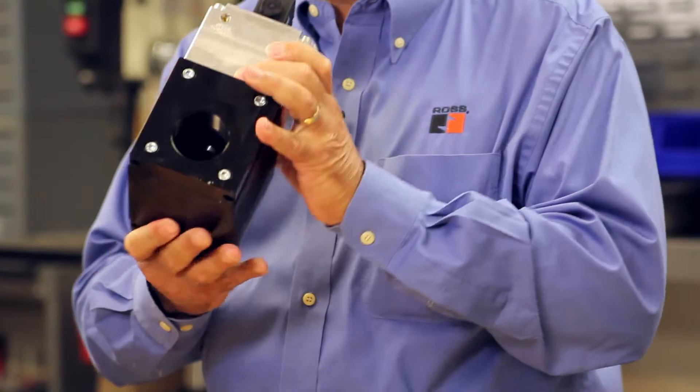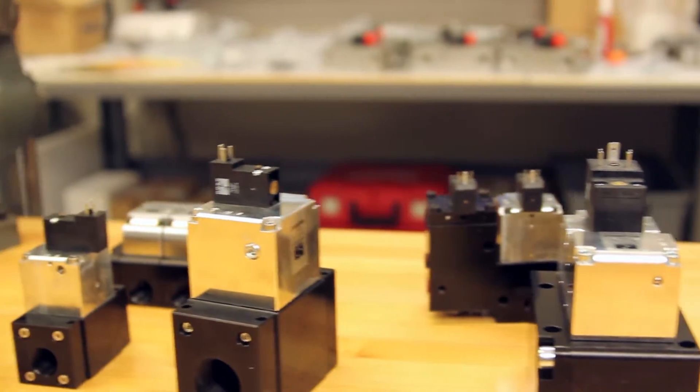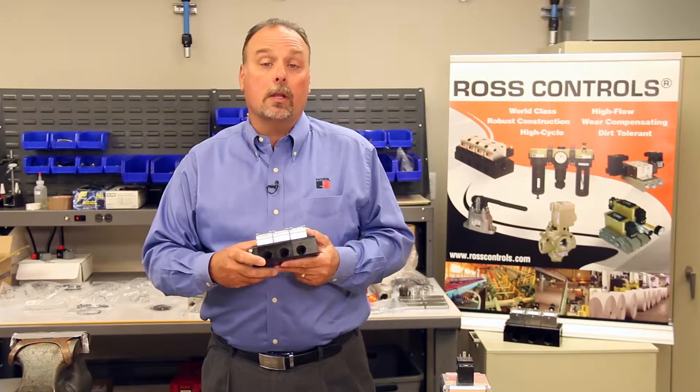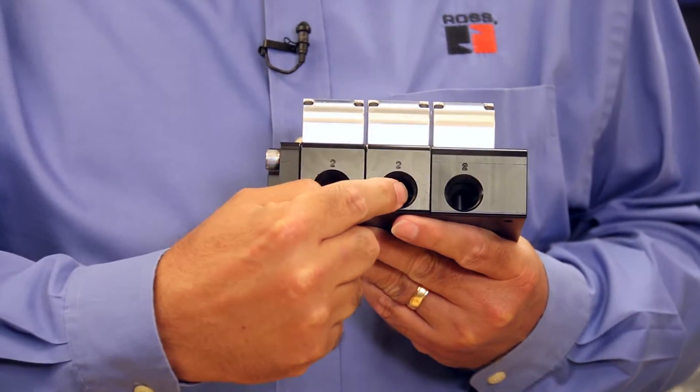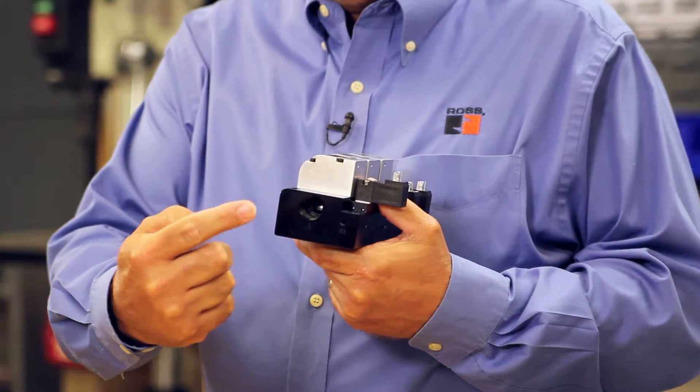These valves also are bi-directional so that they're blocked in either direction and lend themselves very well to different processes and flow routings. So you can have separate inlets with a common outlet or you can have a common inlet with separate outlets.